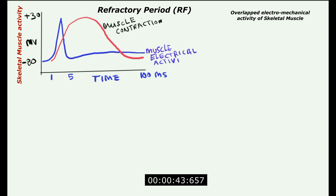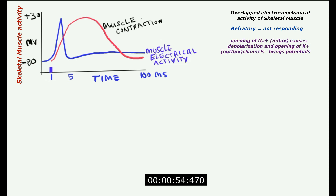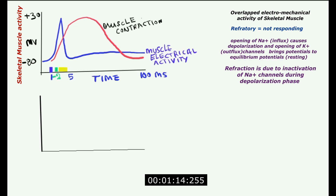Here we can study the refractory period property of skeletal and cardiac muscles. Refractory means not responding — during depolarization, the sodium influx and activity of the sodium channels are not affected by subsequent stimuli. The blue color indication on the x-axis shows the point of stimulus, the green block shows the absolute refractory period, and the yellow block shows the relative refractory period, where the muscle can respond to a stimulus.